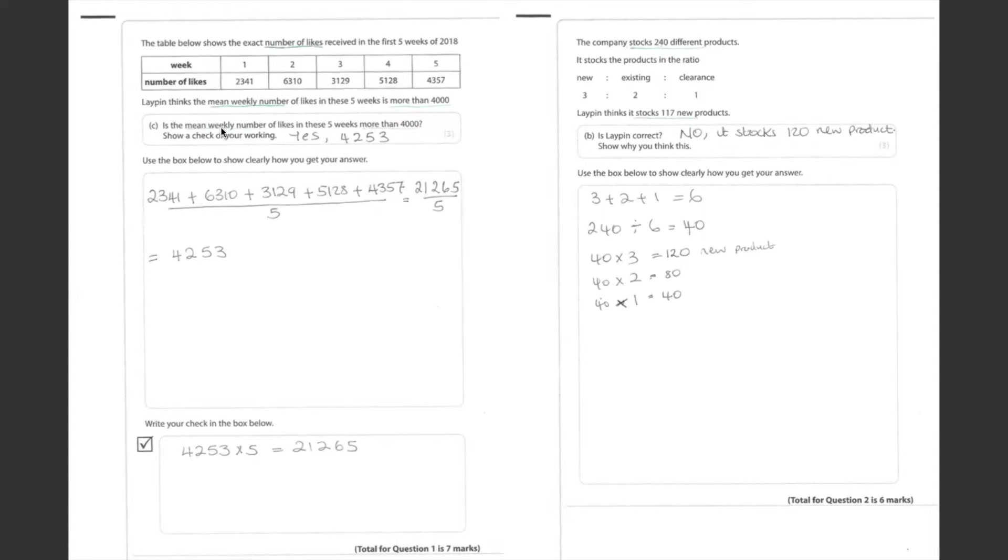Lapin thinks that the weekly number of likes is more than 4,000. It is actually more than 4,000. Here, we're going to check our work. We do the inverse of our work. The inverse is 4,253 times 5, which gives us 21,265. The inverse of division is multiplication.